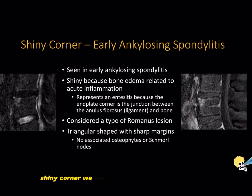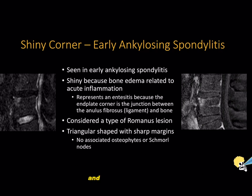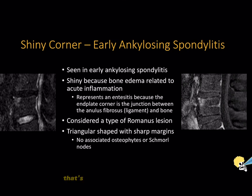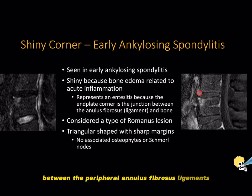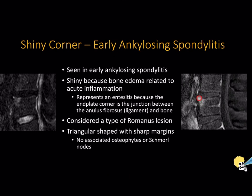The shiny corner sign is seen with early ankylosing spondylitis, and this corner is shiny because there is bone marrow edema related to acute inflammation — that's why we also have enhancement. The region of the shiny corner is an enthesis, because it is the junction between the peripheral annulus fibrosus ligaments and the bone of the vertebral body, so it is considered an enthesitis.